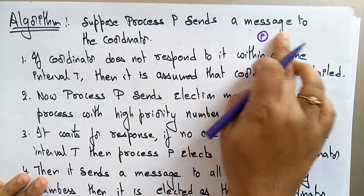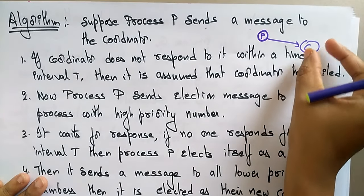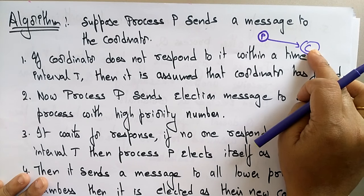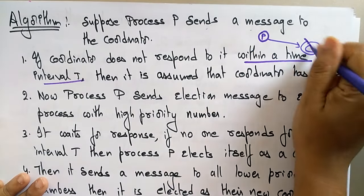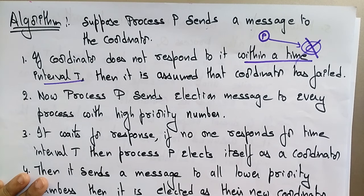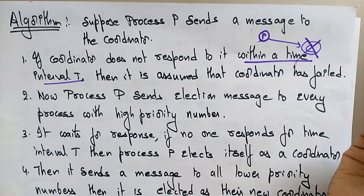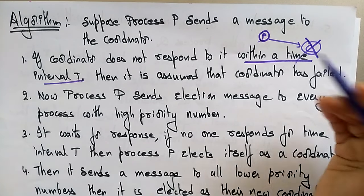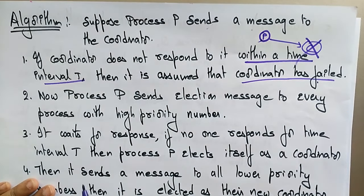Suppose a process P sends a message to the coordinator. If the coordinator does not respond within a time interval T, then process P assumes the coordinator has failed. This is the first step — if that person is not responding within a time, it is assumed that the coordinator has failed.